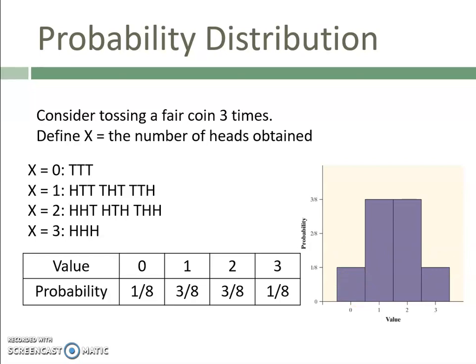When we have a distribution in graph form, we can always describe it using our SOCS — even without the graph. We'll still talk about the shape, the center (usually the mean), the spread (the standard deviation), and then if there are any outliers present.